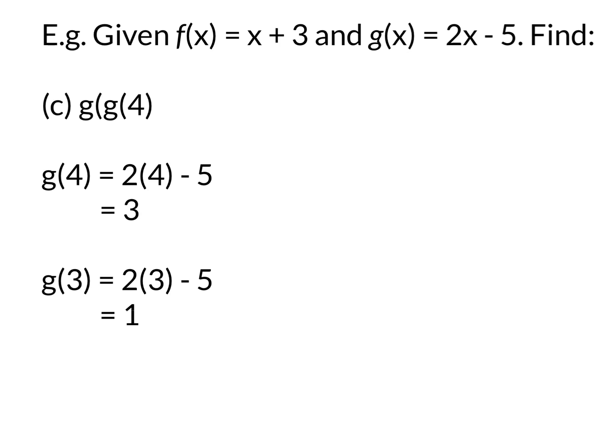Sometimes we have 2 lots, so g(g(4)). Take the 4, put it in the value where the x is for g, and you get 2 lots of 4 minus 5 is 3. Take that 3 and put it back into g, because that is the first function, and you get g(3), 2 times 3 is 6 minus 5 is 1.